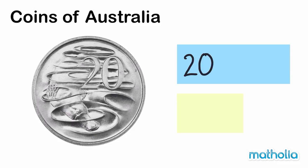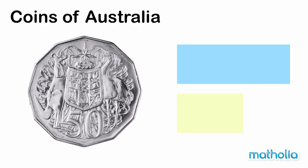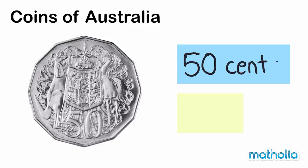Have you seen this coin before? This is a twenty cent coin. Twenty cents. This coin has straight edges. It is a fifty cent coin. Fifty cents.